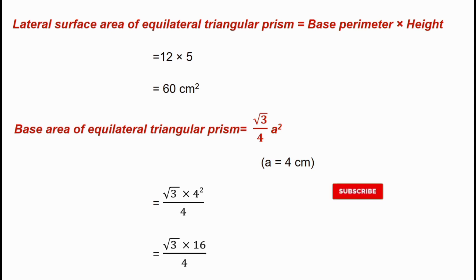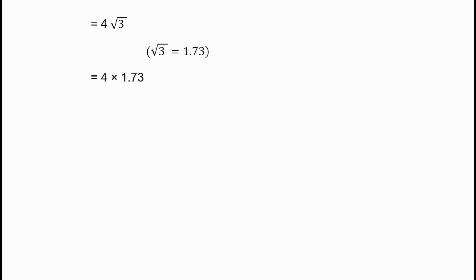That is equal to root 3 into 16 by 4. Then 16 divided by 4 gives 4, so that is equal to 4 root 3. The value of root 3 is 1.73, so substituting: 4 into 1.73, which equals 6.92 cm². Therefore, the base area is equal to 6.92 cm².